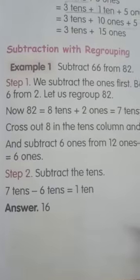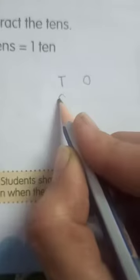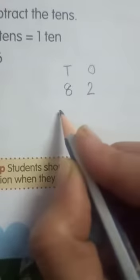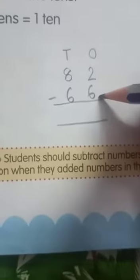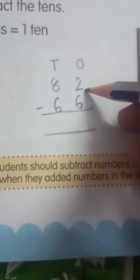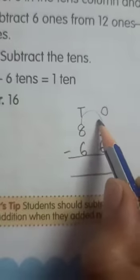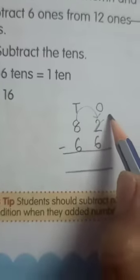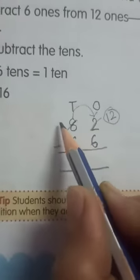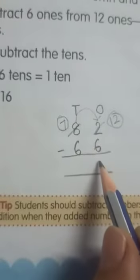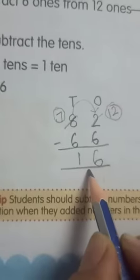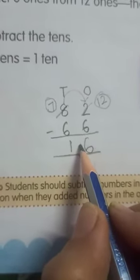Now, subtraction with regrouping. So children, here we have to subtract 66 from 82. First, write ones and tens and then write the numbers in their correct places. Bigger number should come above the smaller one. So 82, you have to subtract 66 from 82. Now children, look at the ones number. Six cannot be subtracted from two. So you have to do the regrouping here. You have to take one ten from the tens place. After taking one ten, this two will become twelve and this eight will become seven. Twelve minus six is six and seven minus six is one. So this is the difference. This is the way we subtract with regrouping.